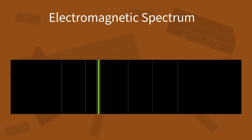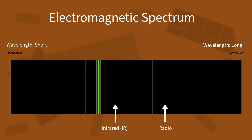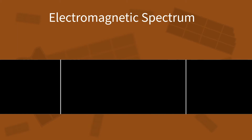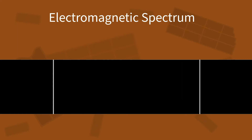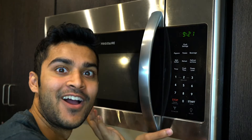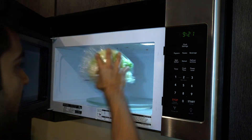The light waves we see make up only a small fraction of what's known as the electromagnetic spectrum. In the spectrum, light is ordered by wavelength. Maybe you've heard of many of these kinds of light: infrared, radio waves, UV rays, x-rays, and more. But this is the box I want to focus on in this video. Any light with a wavelength within the range of one millimeter and one meter is called a microwave, which is the kind of light that this thing uses to heat up your food.